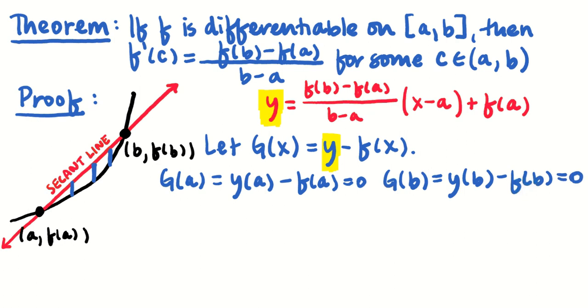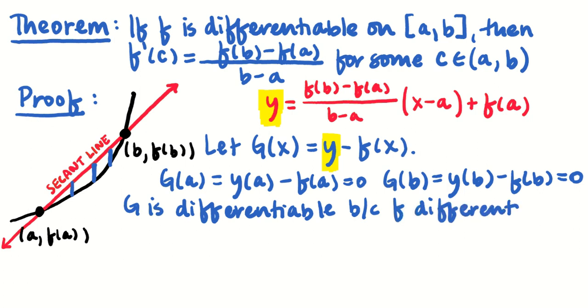Okay. Now, moreover, I need to point out that g is differentiable. Specifically because, okay, y is a line. A line is very differentiable. It's got slope defined everywhere. It's got the same slope everywhere. And g is going to be differentiable mostly because f is differentiable. And I'm not going to have room to write that. Okay. g is differentiable because f is differentiable.